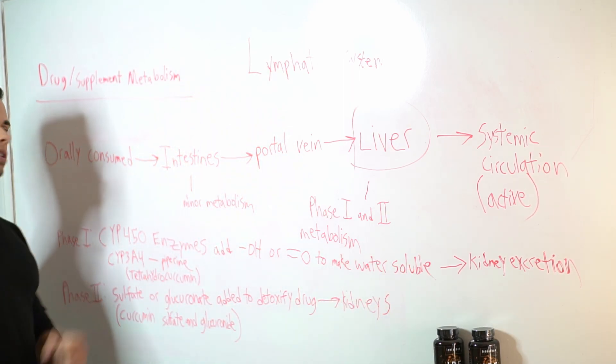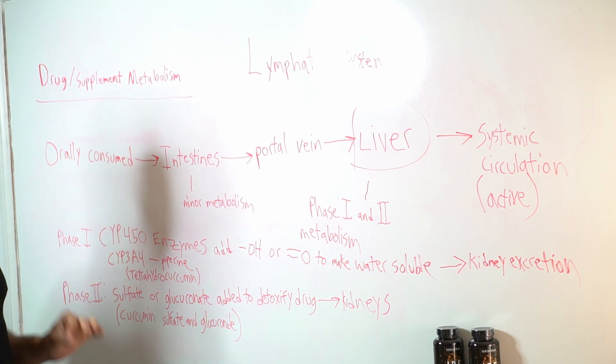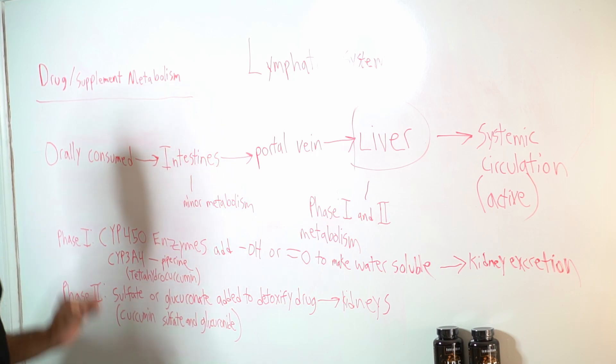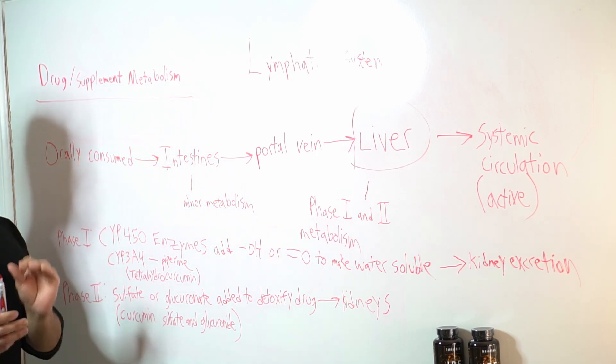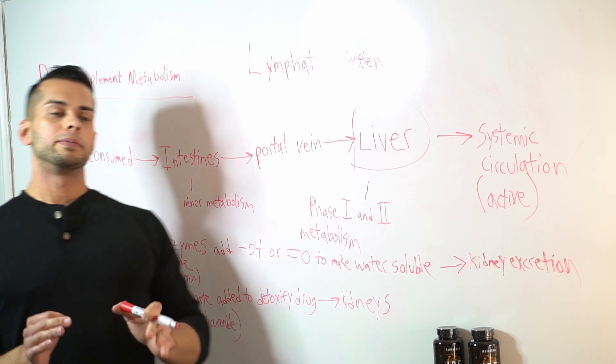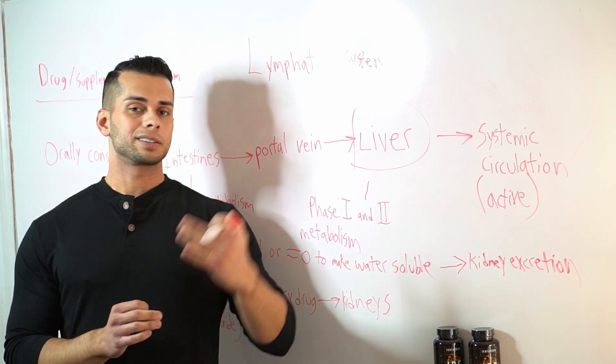It is important to note that one ingredient or compound that forms from this phase one process by curcumin is what is known as tetrahydrocurcumin, which does have a little bit of benefits on its own, which we can discuss later.